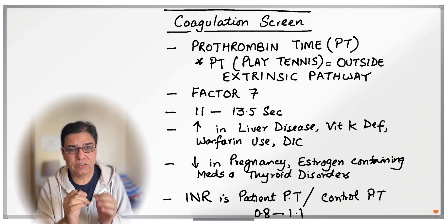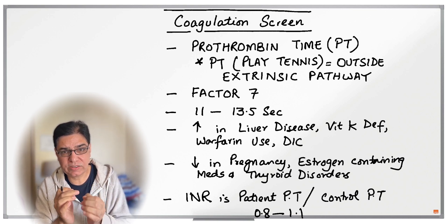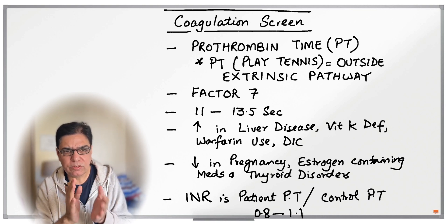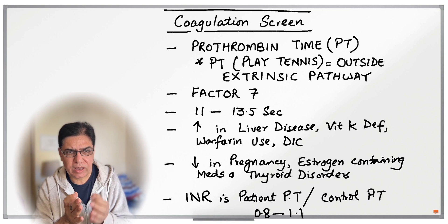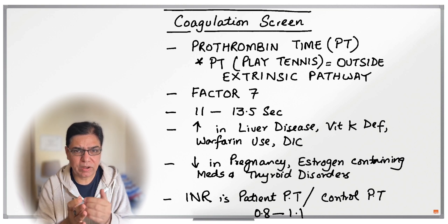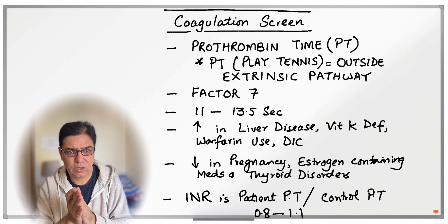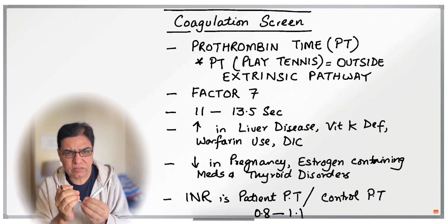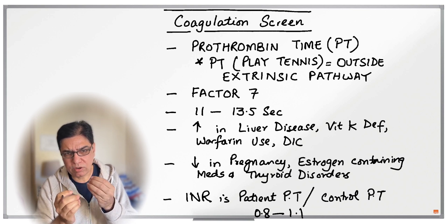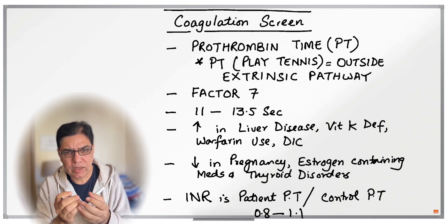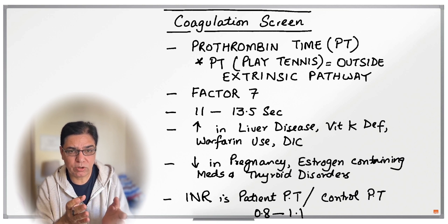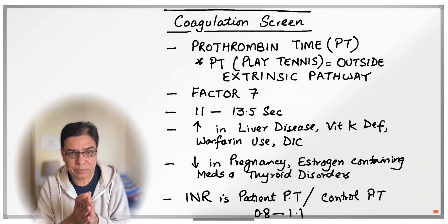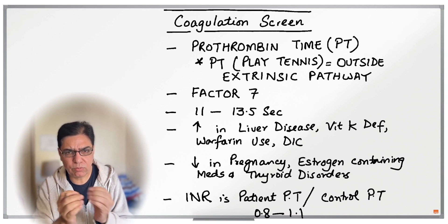Associated with prothrombin time is the INR, which stands for International Normalized Ratio, and it should be somewhere between 0.8 to 1.1. It is calculated as the patient's prothrombin time divided by a control prothrombin time. It is commonly used in the setting of anticoagulation — for example, if a haematologist is prescribing heparin and wants to keep the INR ratio between 2 and 2.5.